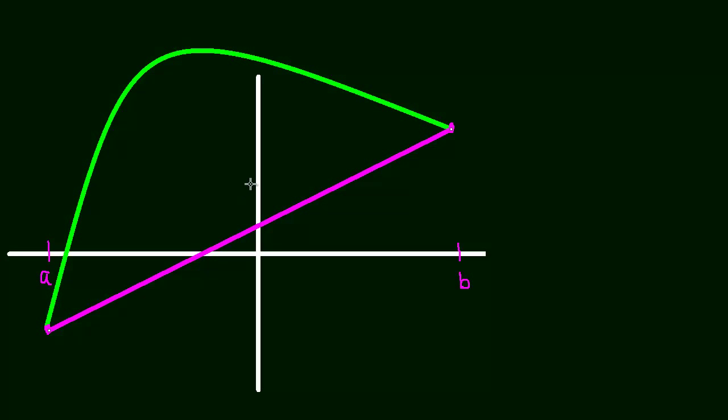Let's take a look at the mean value theorem and I want to explain what I've drawn here. So in green is our function and in purple is the secant line that runs between A and B. This function could continue on, it doesn't matter, but we chopped it up at A and B and we drew a secant line between A and B.